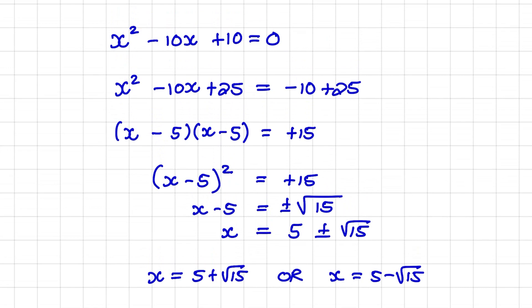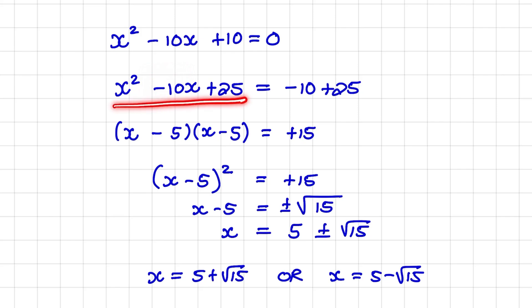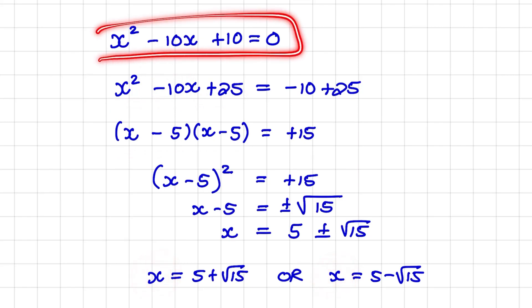To summarize: we took the constant to the right hand side, then added the square of half of the coefficient of x. That allowed us to factorize the trinomial, which led to two possible values for x that will satisfy this equation.